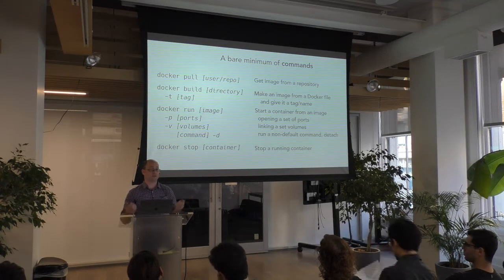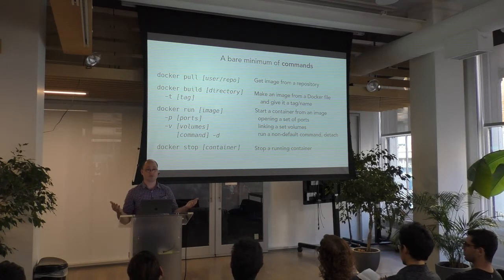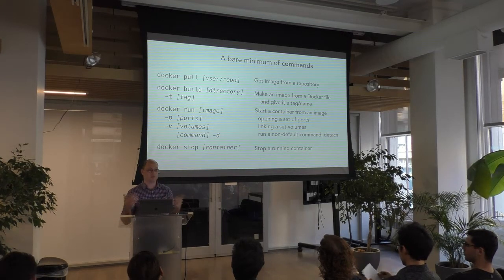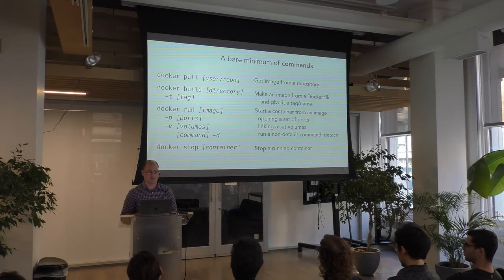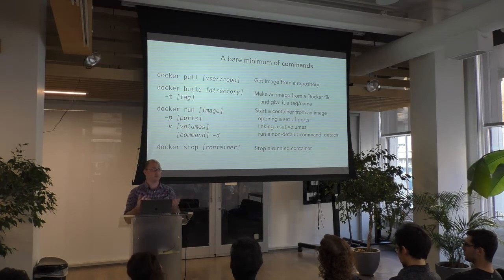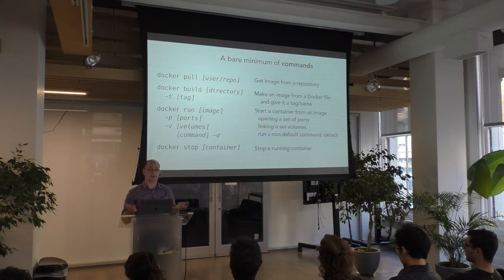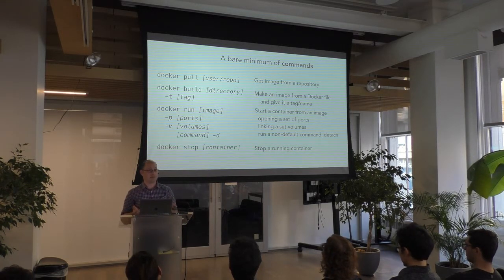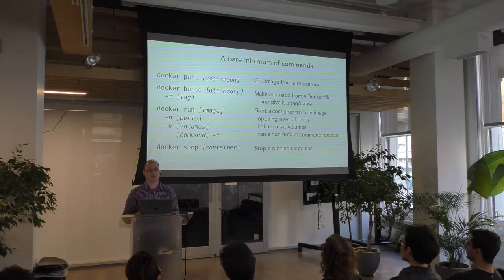There's Docker pull, which means you're going to get an image from another repository — maybe your organization's project repository. There's Docker build, which is to take a Dockerfile and build it into an image, giving it a name so that you can use it again.